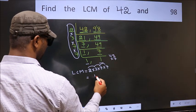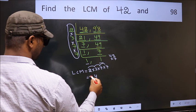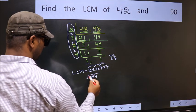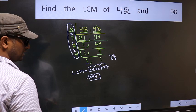7 times 2 is 14, write 4 carry 1. 7 times 4 is 28 plus 1 is 29. So 294 is our LCM.